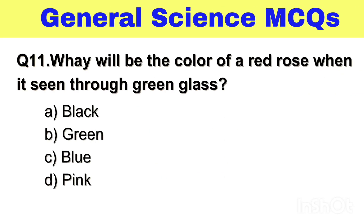Question No. 11. What will be the color of a red rose when it is seen through green glass? Option A. Black, B. Green, C. Blue, D. Pink. The right answer, Option A. Black.